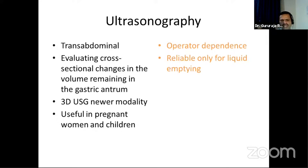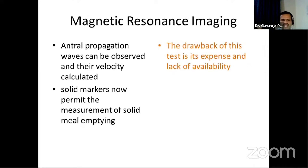Transabdominal ultrasound has a limited role — it can measure cross-sectional area and calculate gastric volume at various timeframes, but suffers from operator dependency and is mainly reliable for liquid emptying, whereas gastroparesis concerns solid emptying. 3D ultrasound may improve on this but is not yet established; its main utility is in pregnant women and children where radiation exposure must be avoided. MRI can image antral propagation waves, calculate volumes, and use MR-opaque solid markers to measure solid meal emptying, but is limited by cost, availability, and lack of specialized software and expertise.